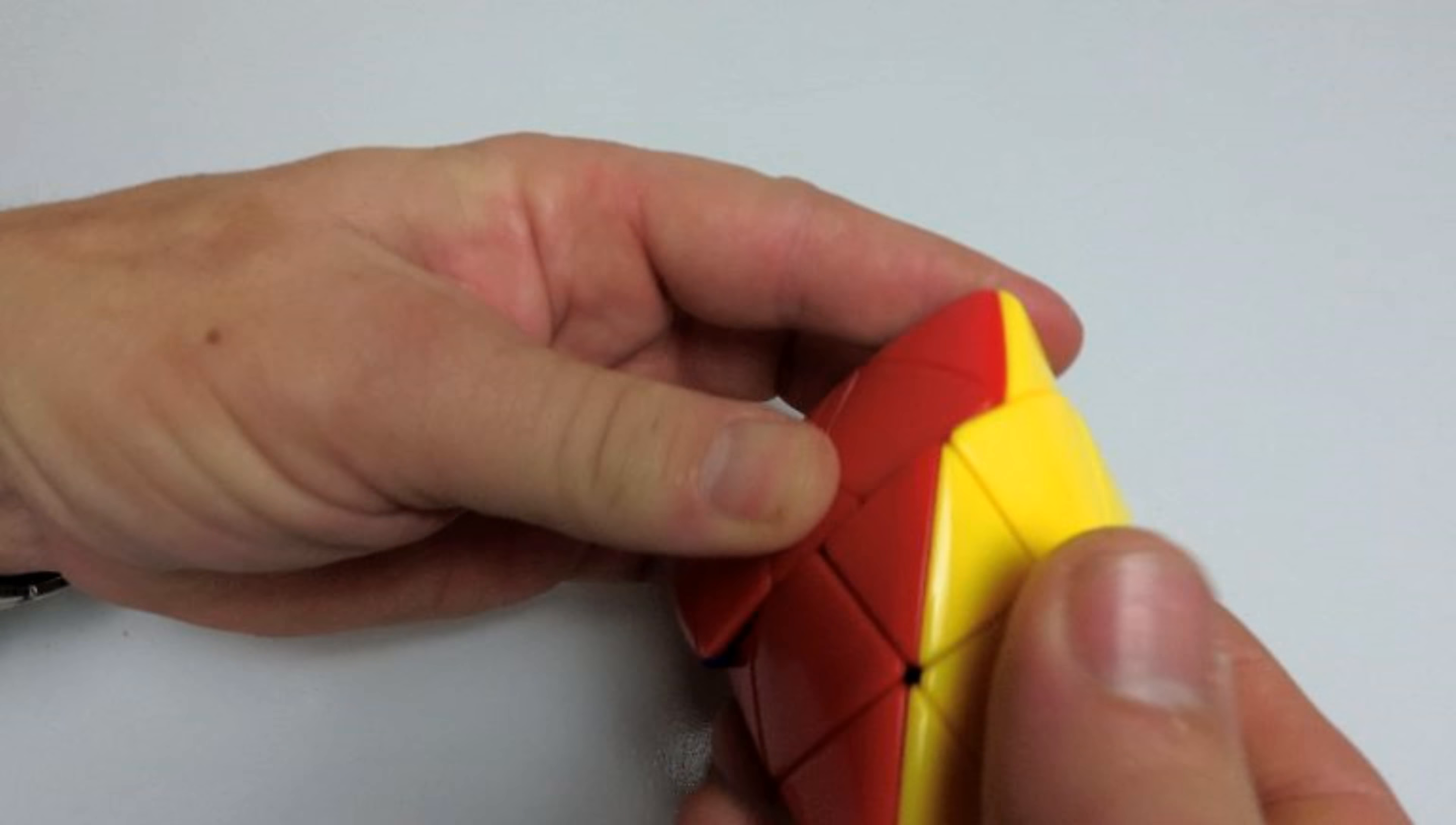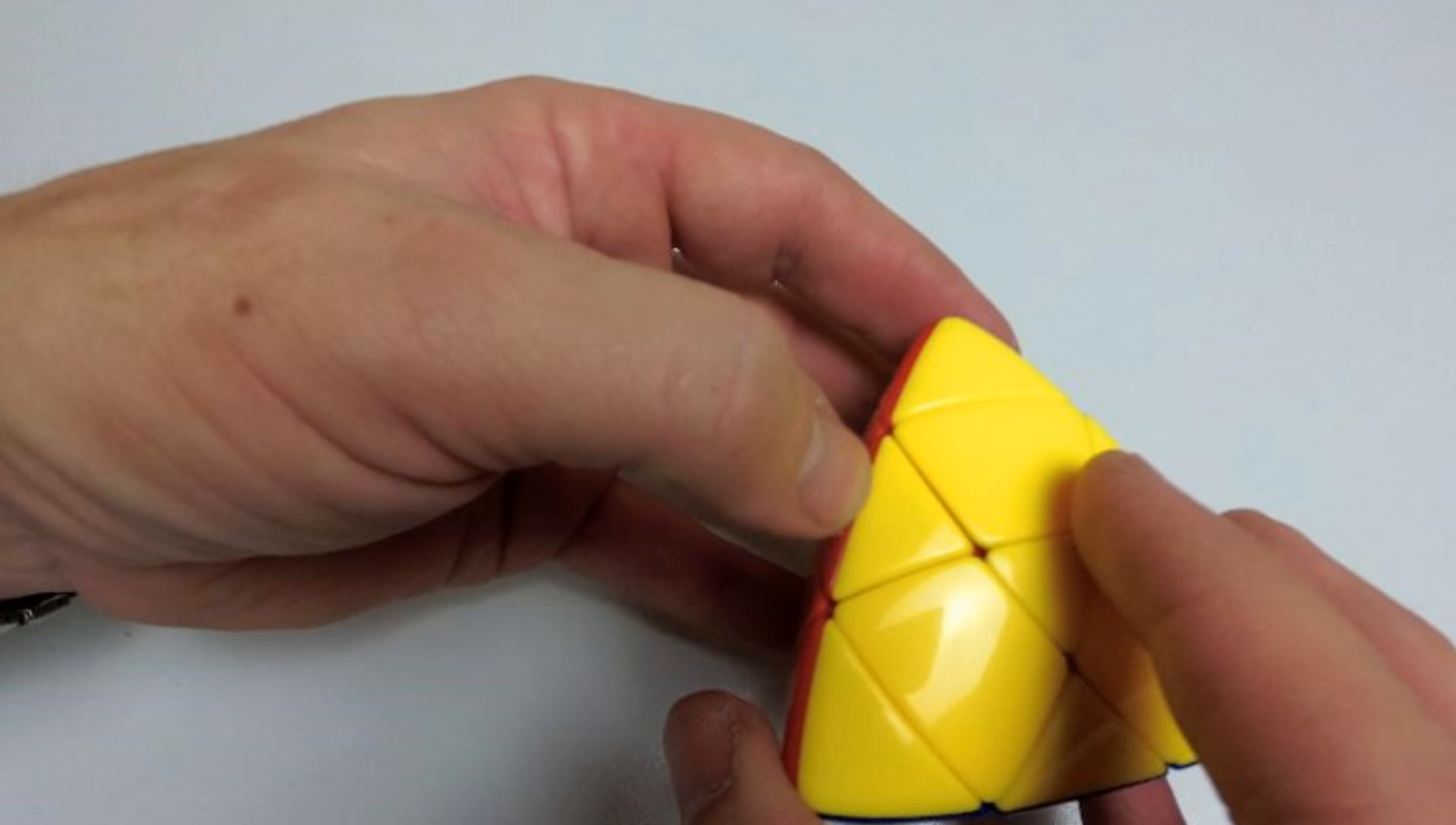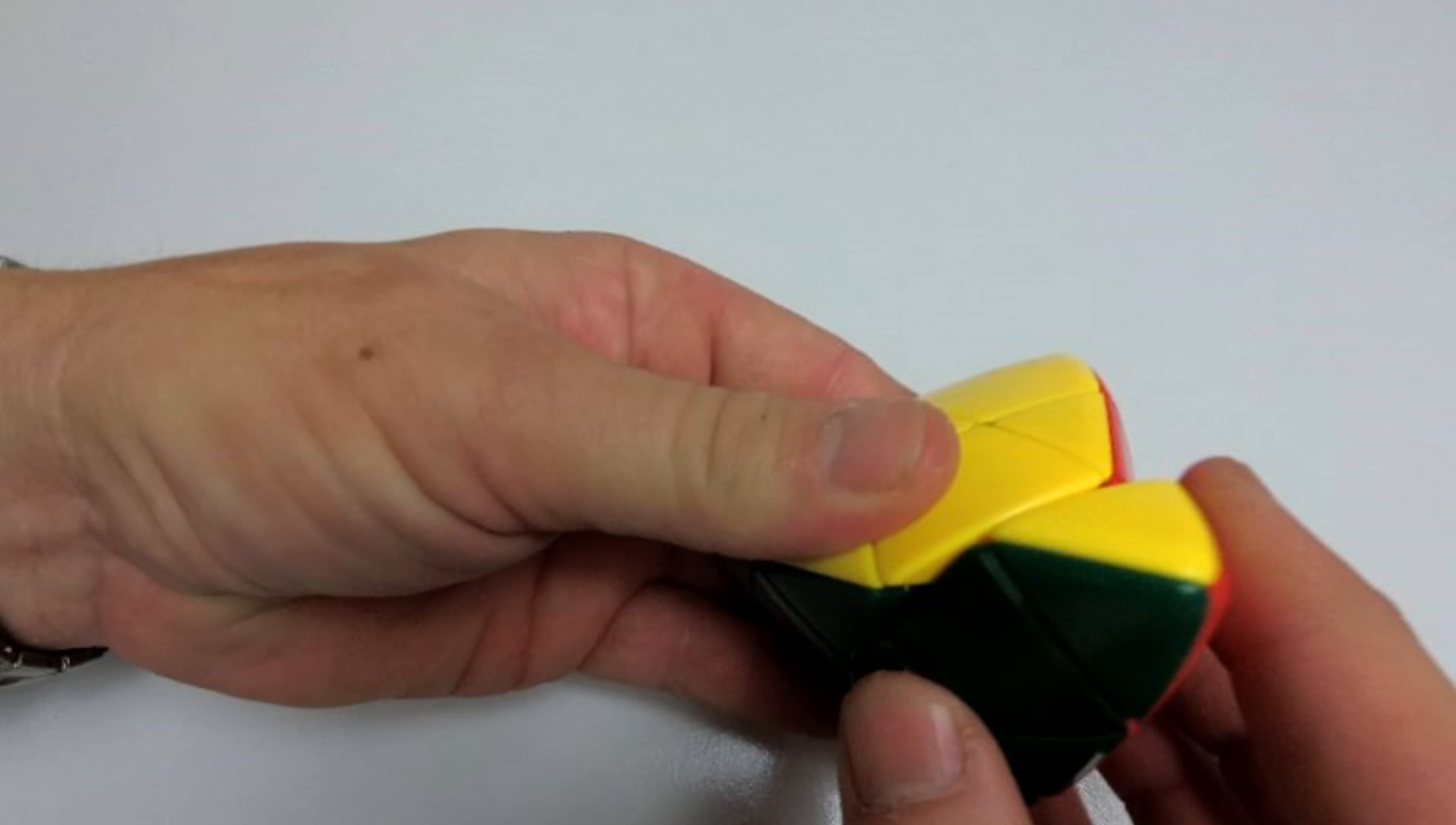The magnets that are in it, I used N50s, 4x2s. They're a little bit strong. When I first did it, they were too weak and you couldn't feel it at all. And then I had to change the way I magnetised the Master Morphix to get it to work properly.